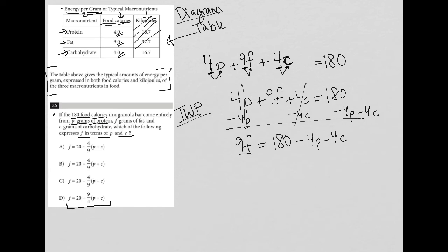Now to get F alone, I need to divide everything by 9. So the 9 has gone there. I have F equals 180 divided by 9 is 20. And then I have 4 ninths P and minus 4 ninths C. I don't see that as an answer.